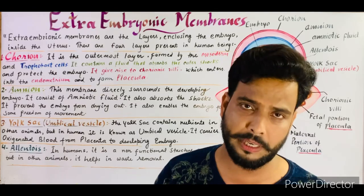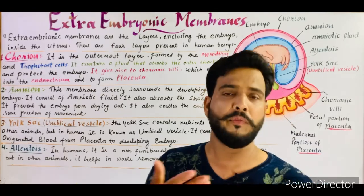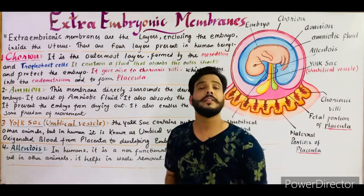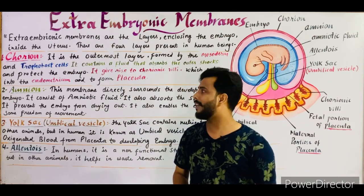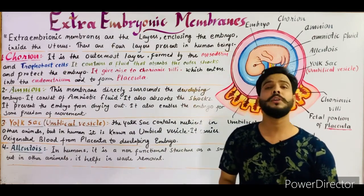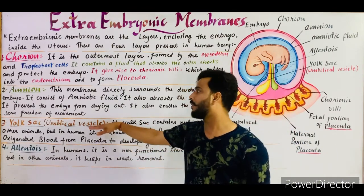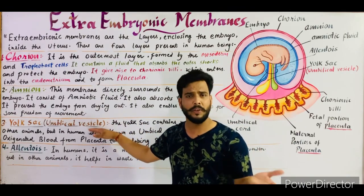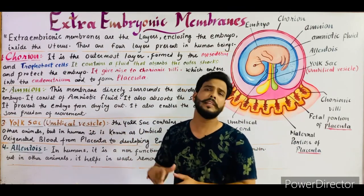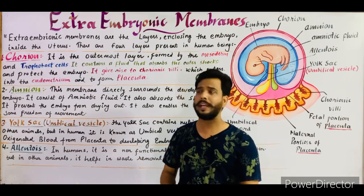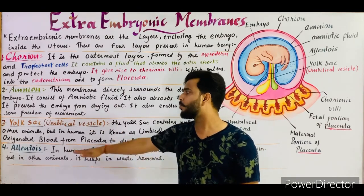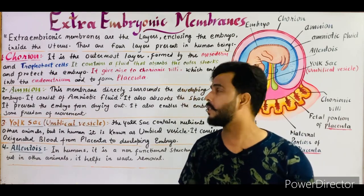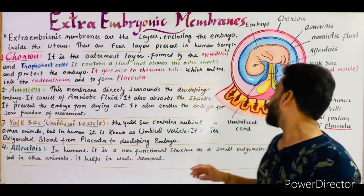All the membranes which surround the embryo inside the uterus of the female are known as extra embryonic membranes. These are: number one, chorion; number two, amnion; number three, yolk sac or umbilical vesicle (called umbilical vesicle in humans, yolk sac in birds and reptiles); and number four, allantois.